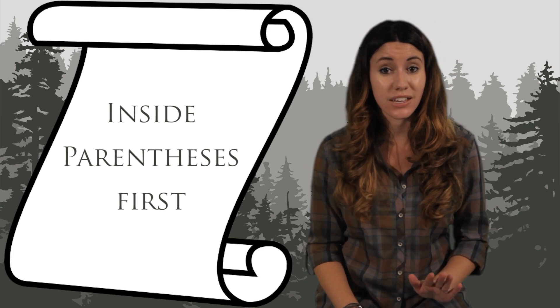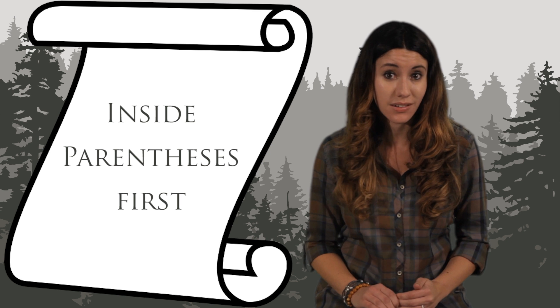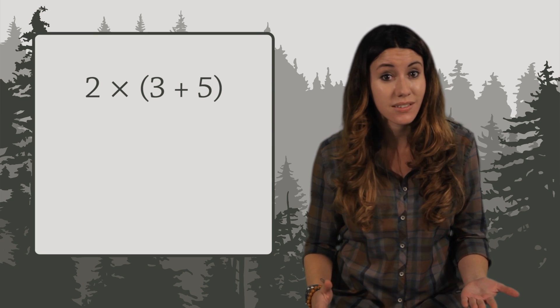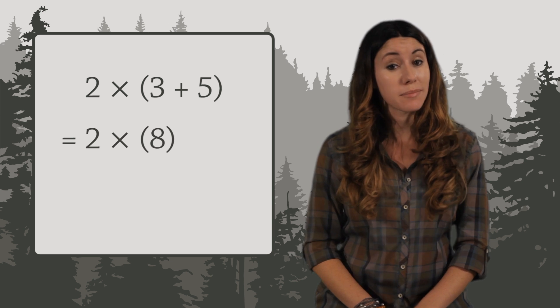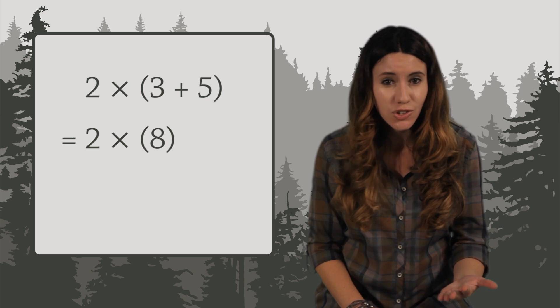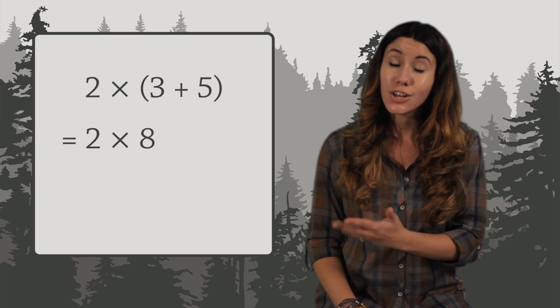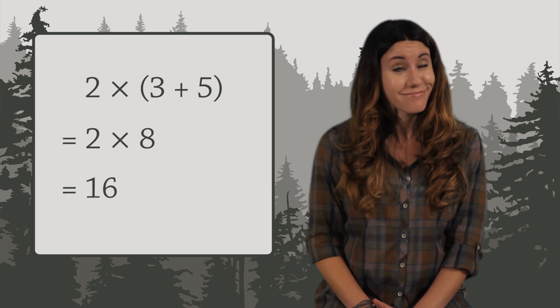Here's the rule. First, do the calculations inside the parentheses. So we first add 3 and 5, since it's inside the parentheses. This leaves us with 2 times 8. There's nothing left to do inside the parentheses, so we can get rid of them. And finally, 2 times 8 equals 16. And we're done.